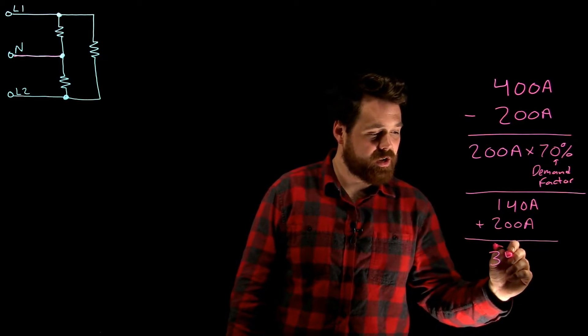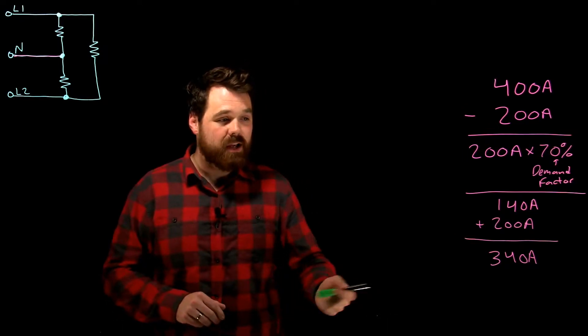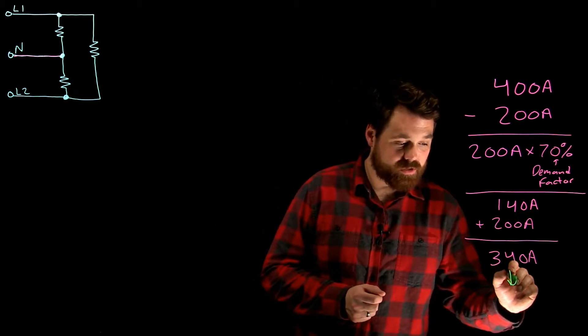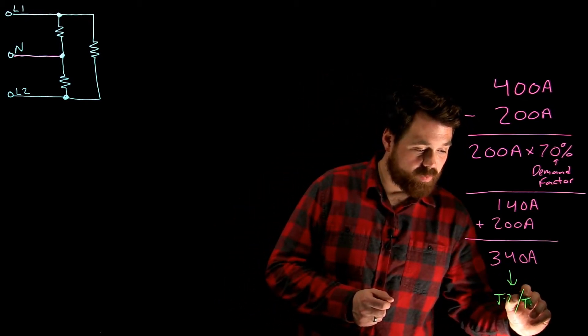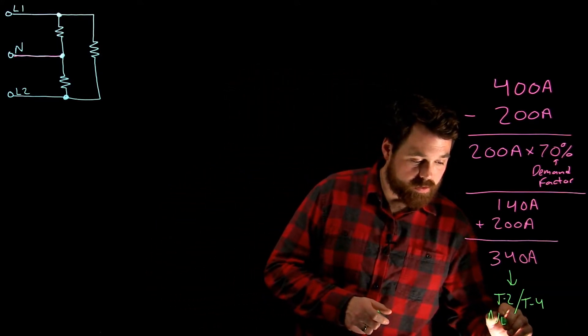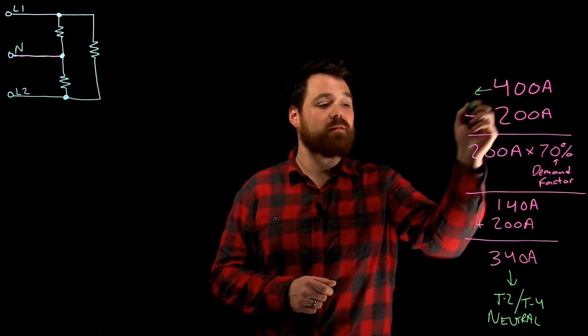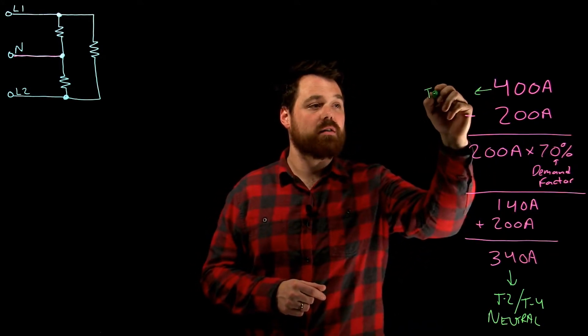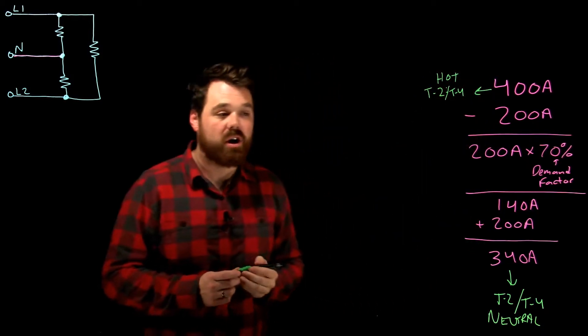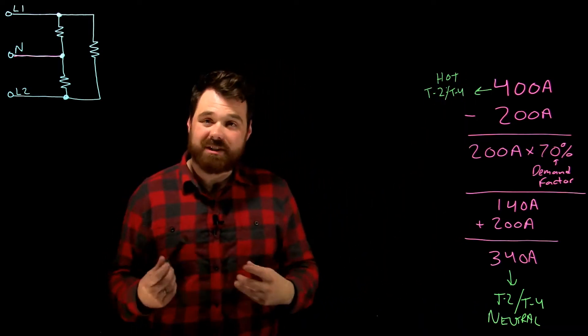In this case, it's going to give us 340 amps. Now this 340 amps becomes the required ampacity of our neutral conductor, meaning we are going to go to table 2 or table 4 to size our neutral conductor. But what we're going to need to do is we're actually going to take this 400 amps to size our hots or table 4. That's going to be to size our hots because our hots are going to take that, or our ungrounded conductors, and our grounded conductor is going to be sized based off of that.